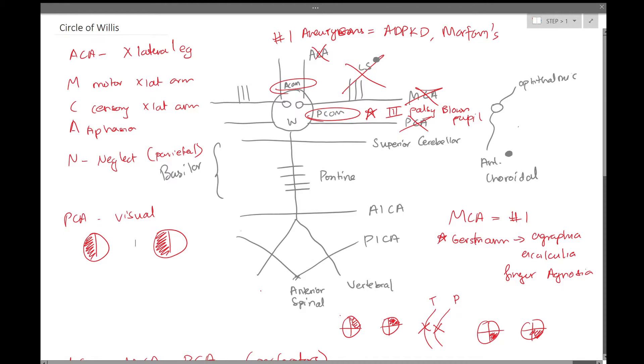Having covered the lenticular striate branches, we can now focus on certain high yield branches of the PCA. Last time we spoke about the PCA visual deficits, which is the homonymous hemianopsia.